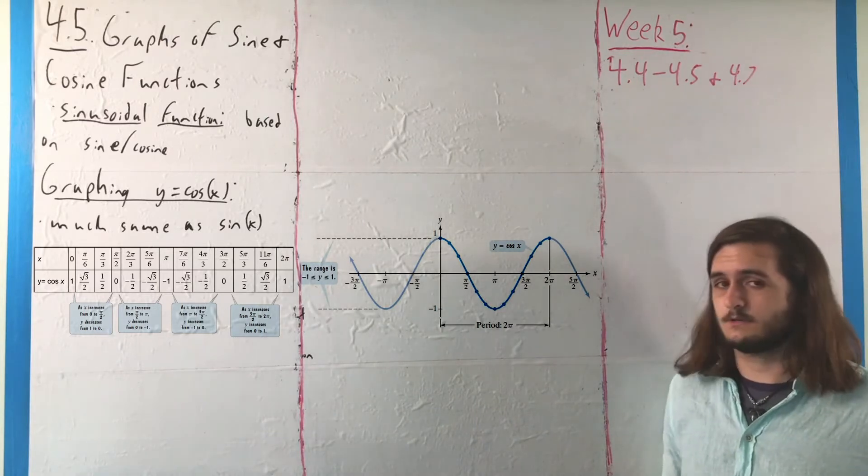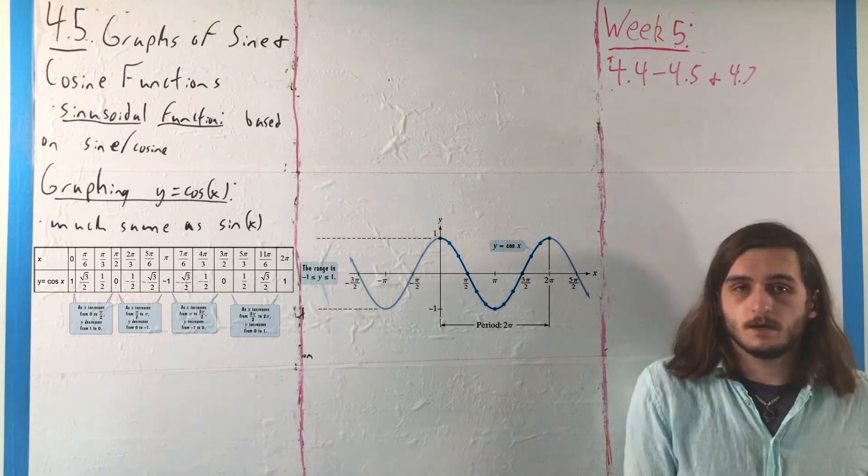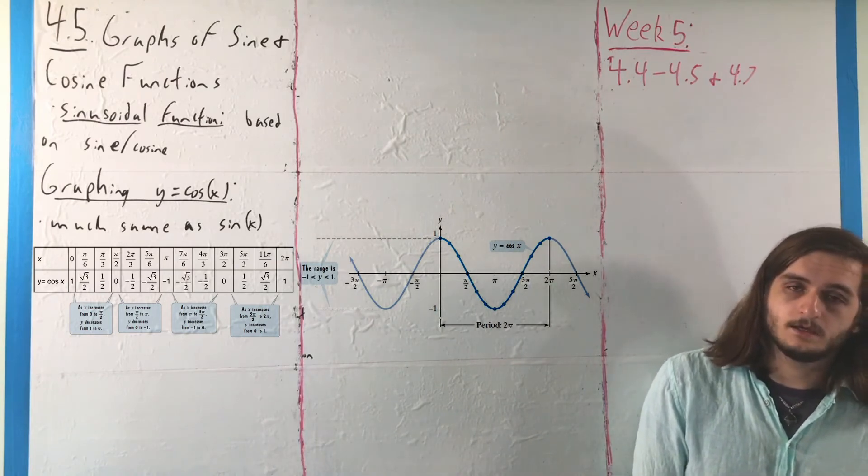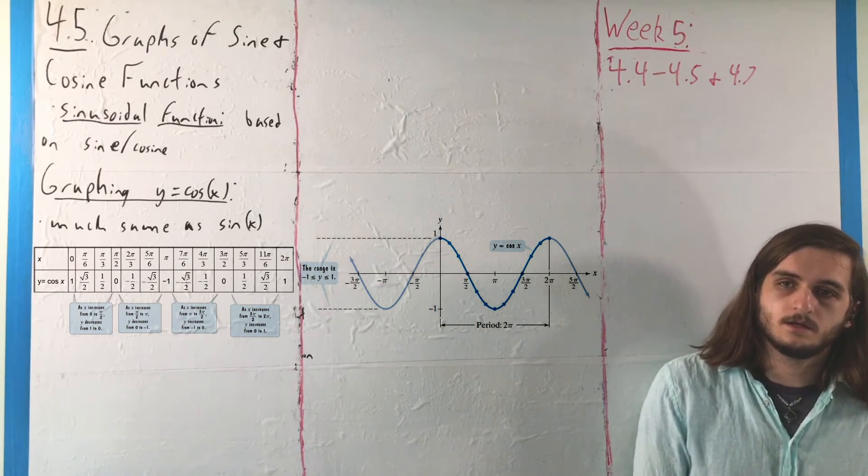in particular pi over 2 units to the right, which interestingly is enough in and of itself to make cosine an even function, whereas sine is odd.